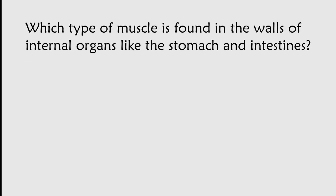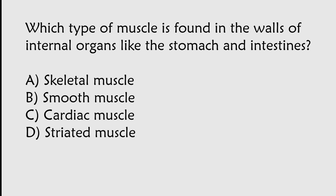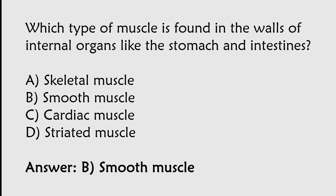Which type of muscle is found in the walls of internal organs like the stomach and intestines? The correct answer is Option B. Smooth muscle is the type of muscle found in the walls of internal organs like the stomach and intestines.